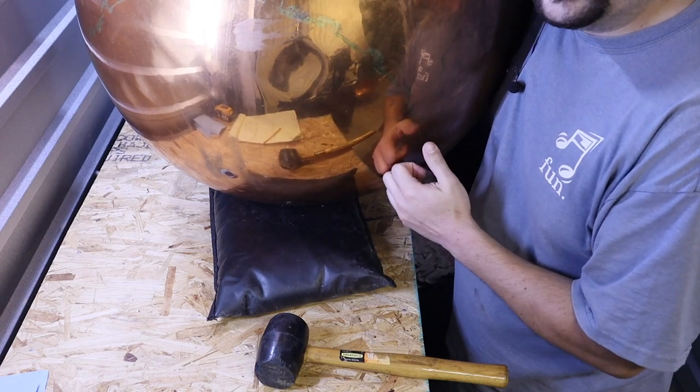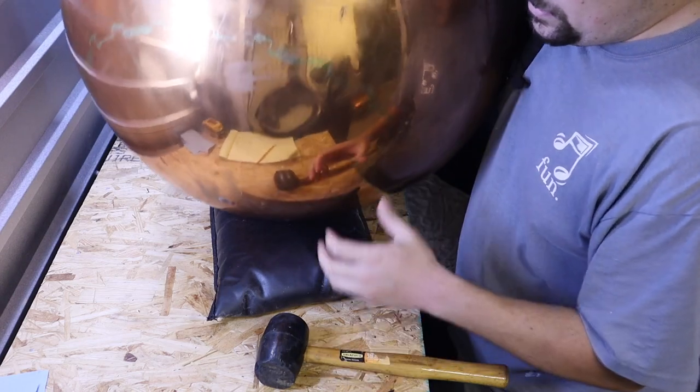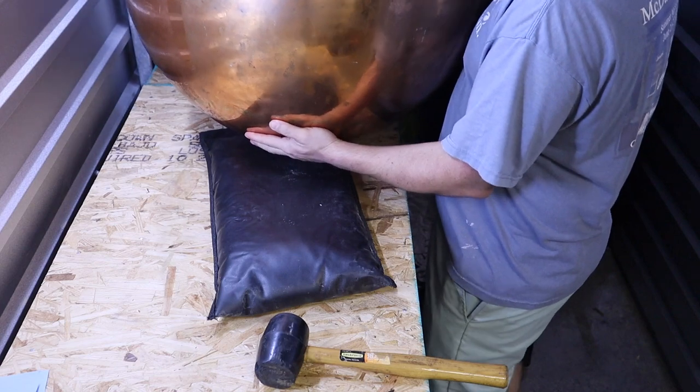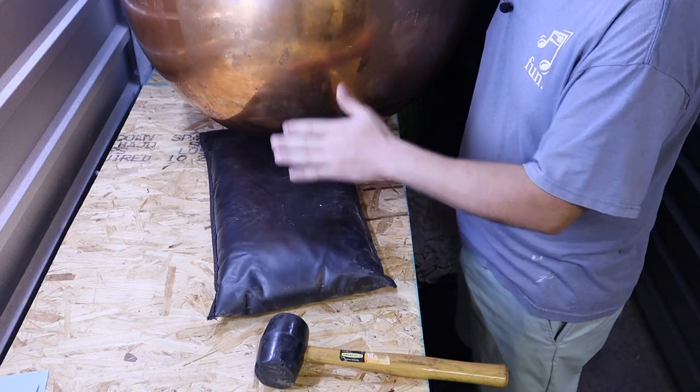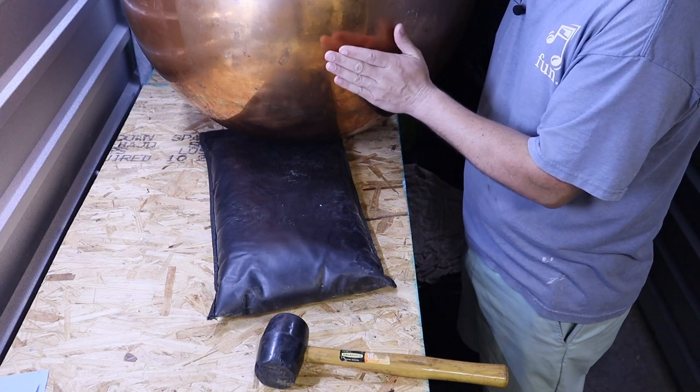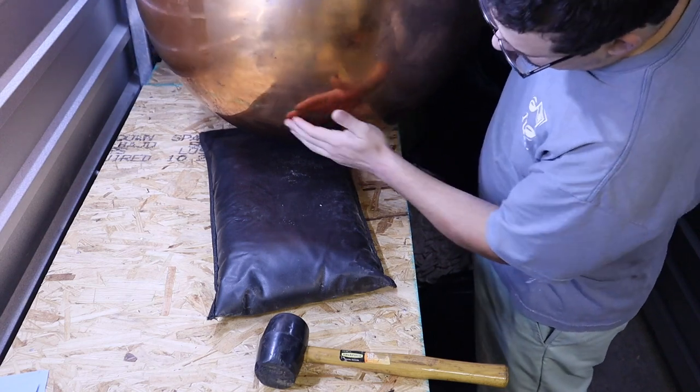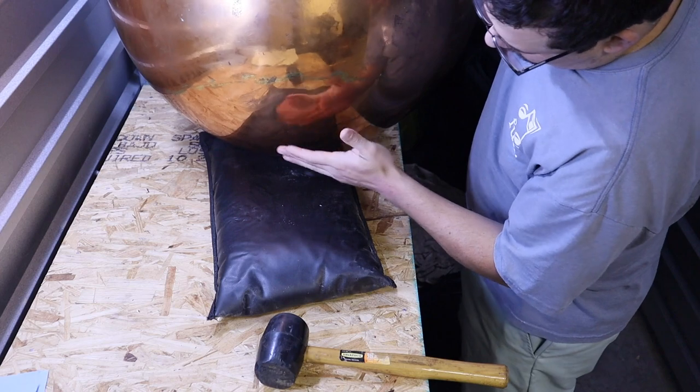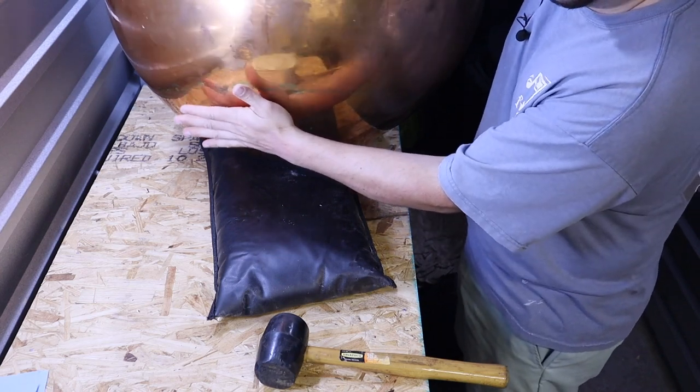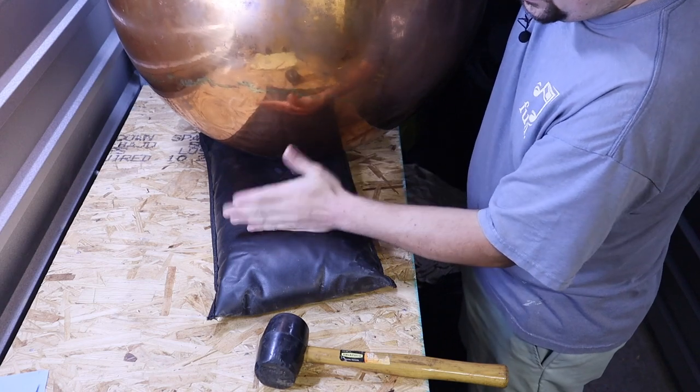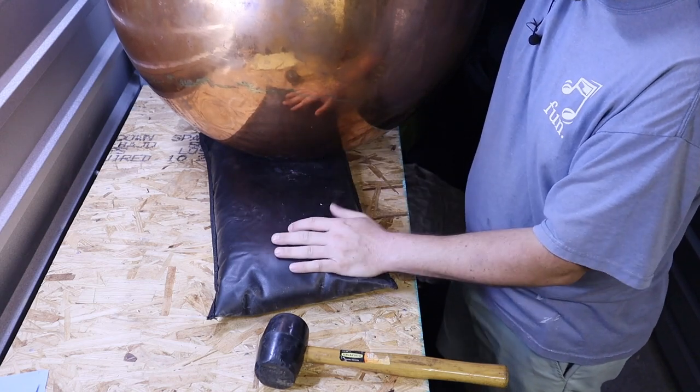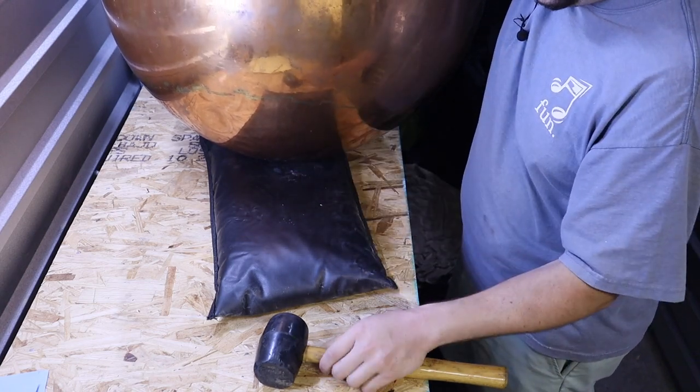What I'm gonna do is take this sandbag and create the proper shape using another area of the bowl that's similar. So for instance, the dent is here. I'm going to shape it using the same area over here, get the sandbag nice and set up so it's almost like a mold, and then use my mallet to bump it out.